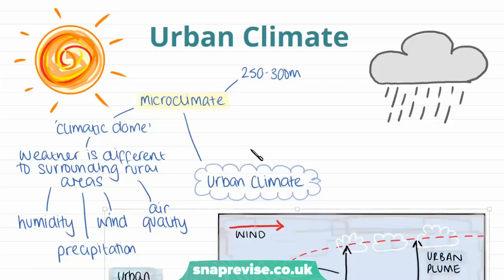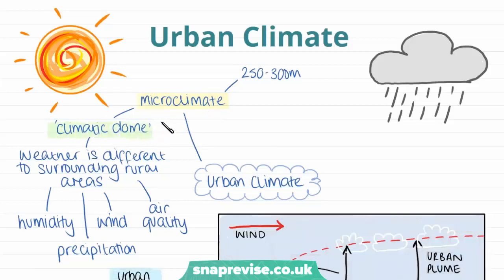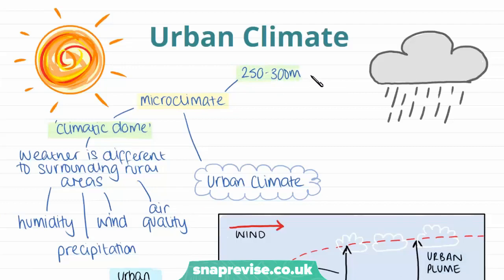Urban areas tend to have their own climate and their own weather systems, or this can be called a microclimate. And this is also sometimes referred to as a climatic dome, as it tends to have a dome shape. Within this climatic dome, the weather is different to the surrounding areas, typically the rural areas. The urban climatic dome will typically have its own set of humidity levels, precipitation, wind and air qualities, which are different from the surrounding rural areas. And for a large city, the dome may extend upwards for around 200 to 300 metres.